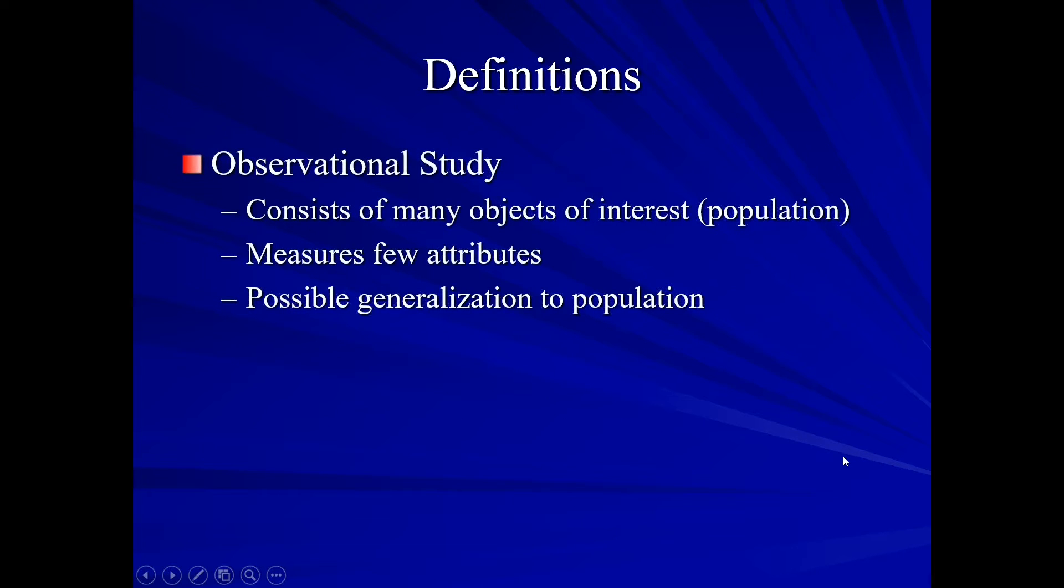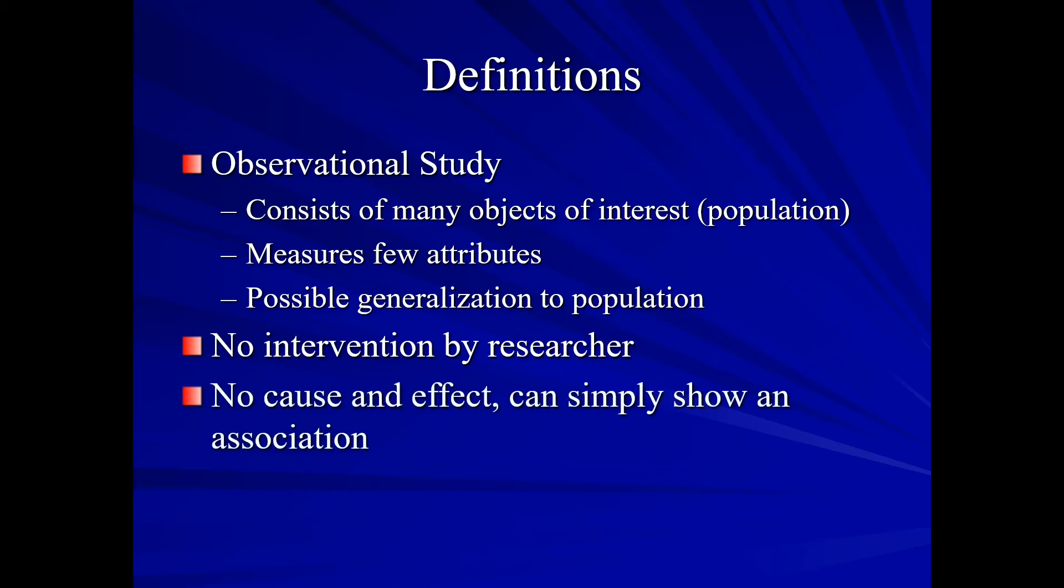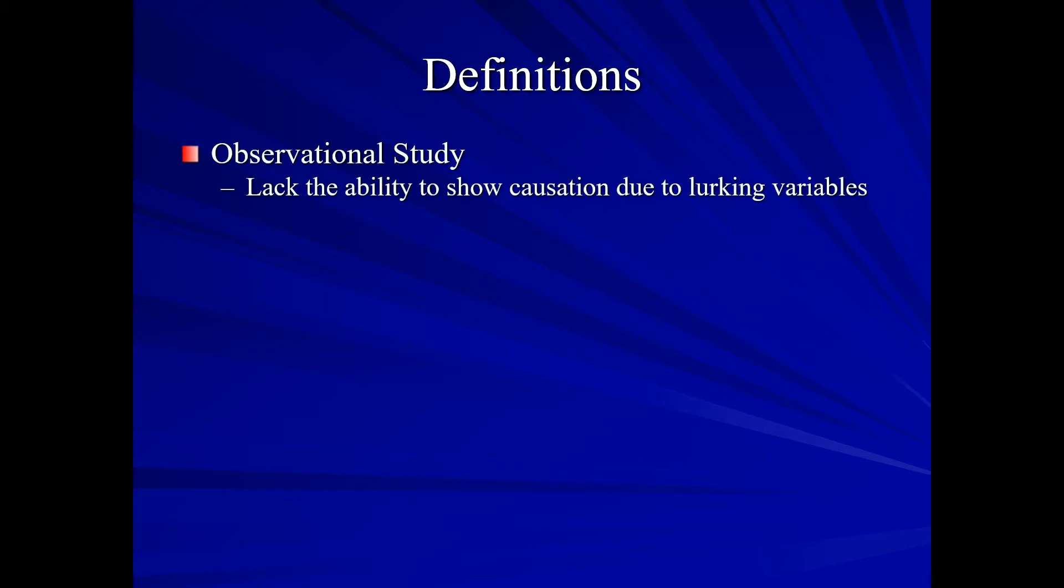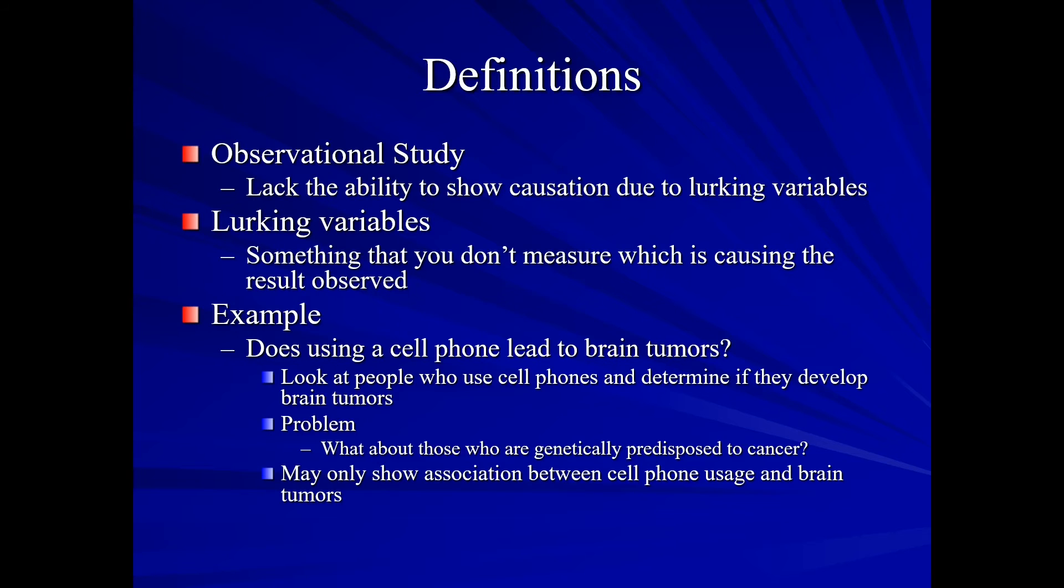Our observational study. This consists of many objects of interest. It measures very few attributes. There is possible generalization to the population. However, with an observational study, it is much harder to generalize to the population because there is no intervention by the researcher. It is simply, as the name suggests, the researcher observes. Therefore, no cause and effect can be made. All that can be shown is an association. Our observational studies, they lack the ability to show causation because of what are called lurking variables. These are something we are not measuring, but it is causing our result observed. An example of lurking variables would be: Does using a cell phone lead to brain tumors? And so we can look at people who use cell phones and determine if they develop brain tumors. There is a problem. What about those who are genetically predisposed to cancer? So, here we can only show an association between cell phone usage and brain tumors.